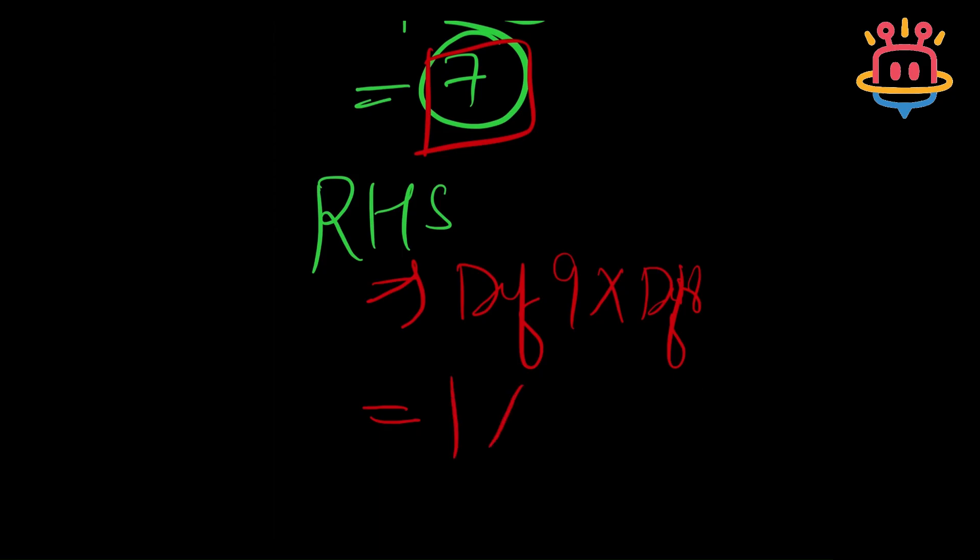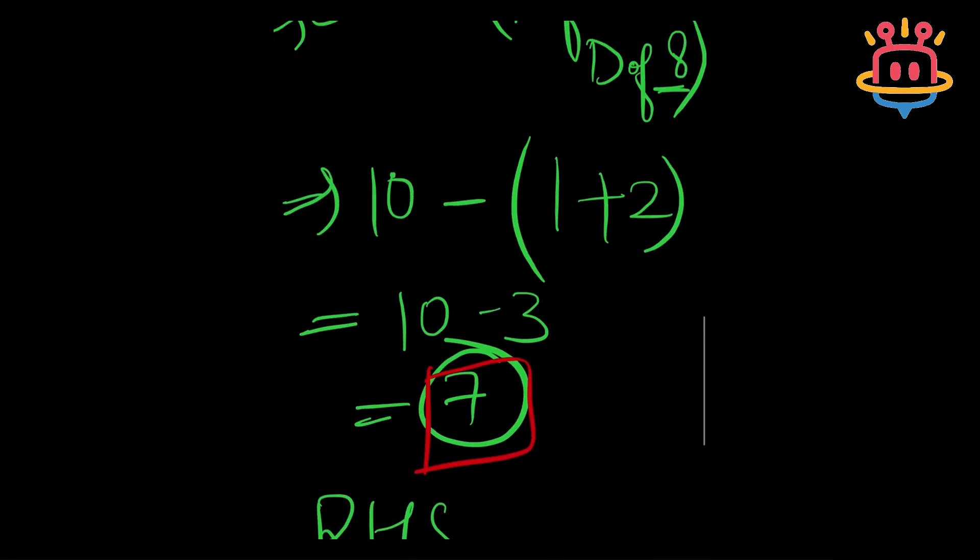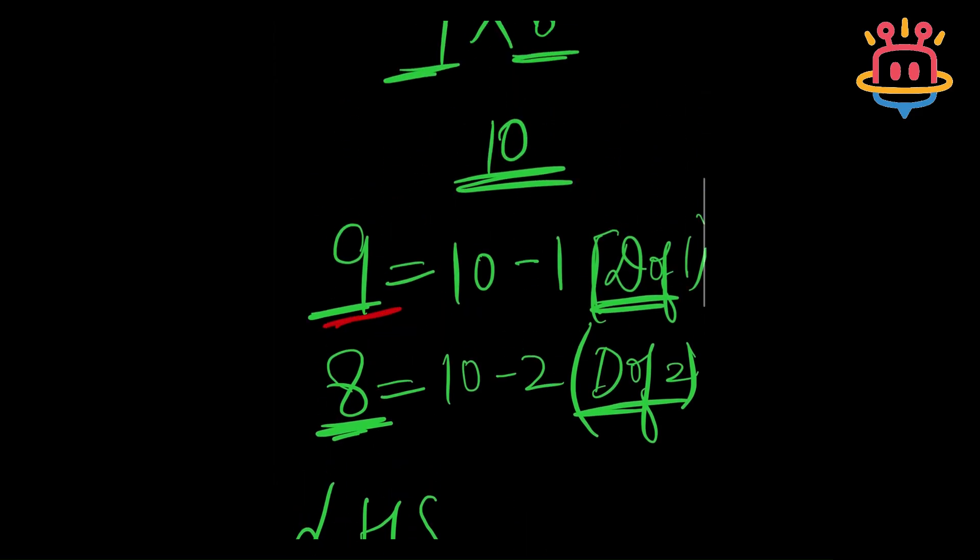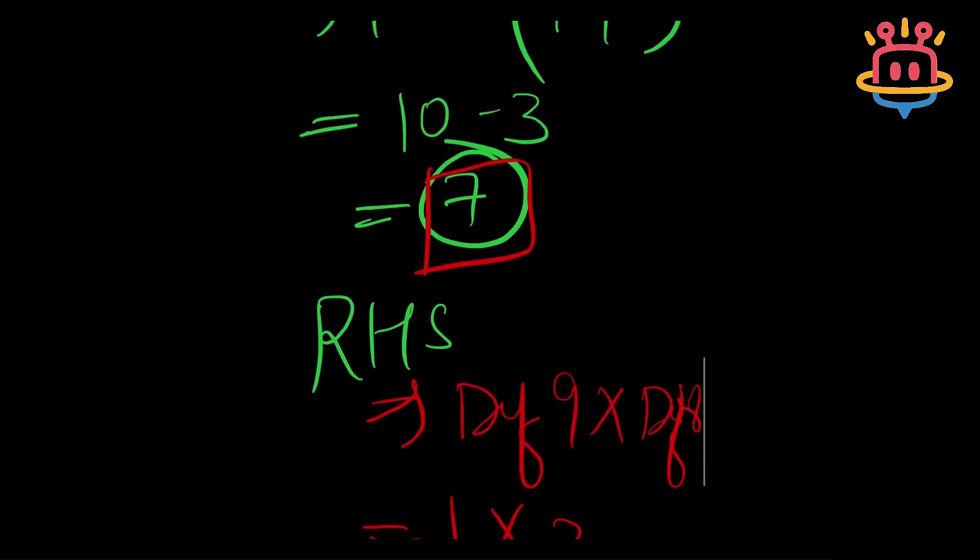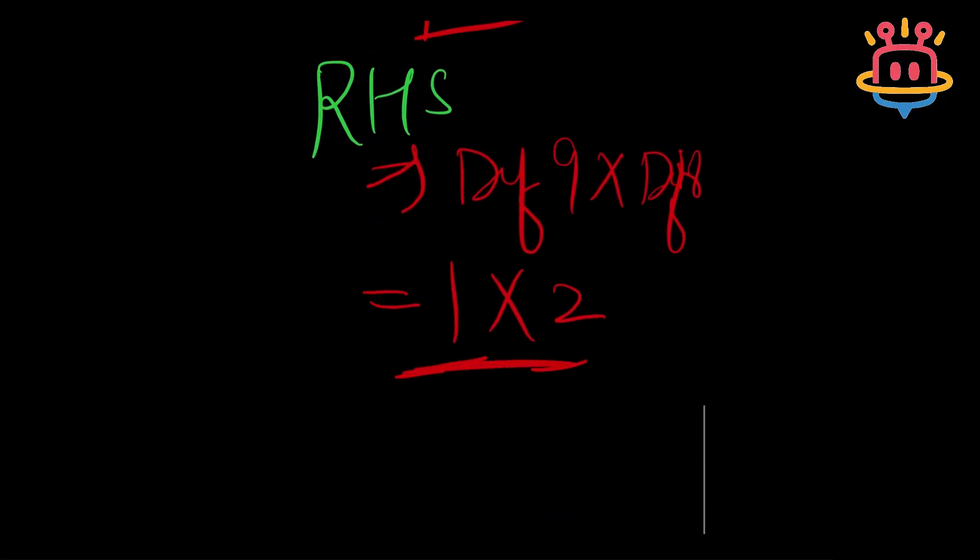So, I will multiply 1 by 2 because deficiency of 9 was 1. Here, deficiency of 9 was 1. Deficiency of 8 was 2. So, I will multiply both of them here together to get my RHS.